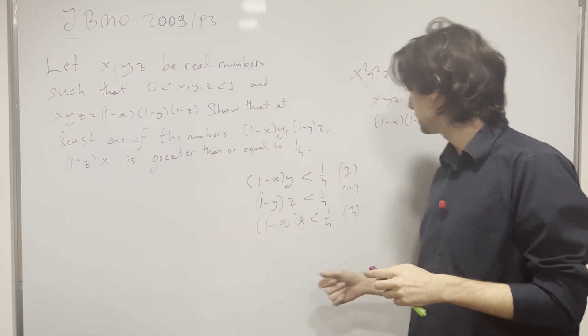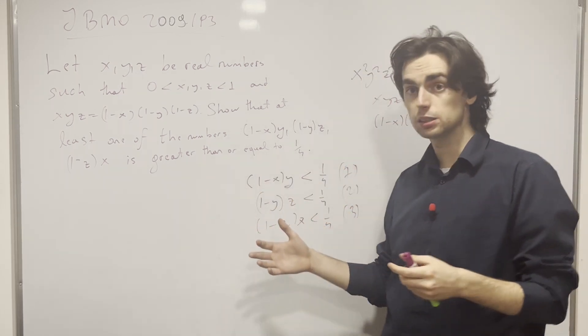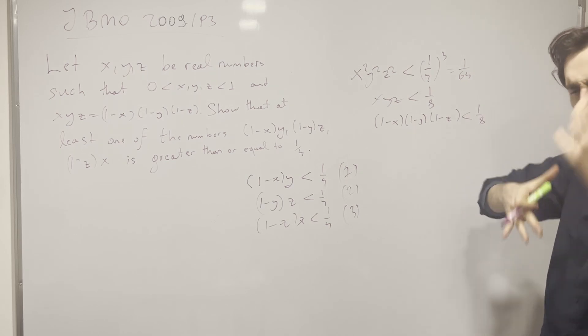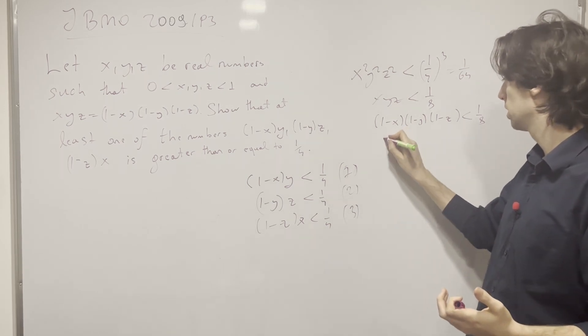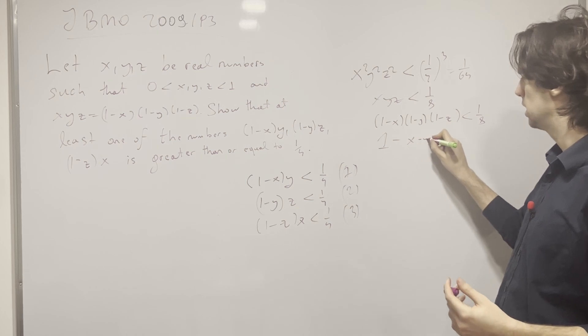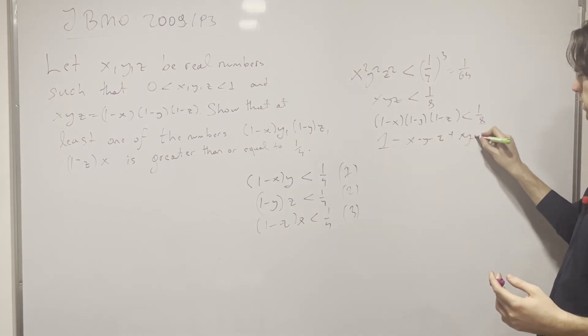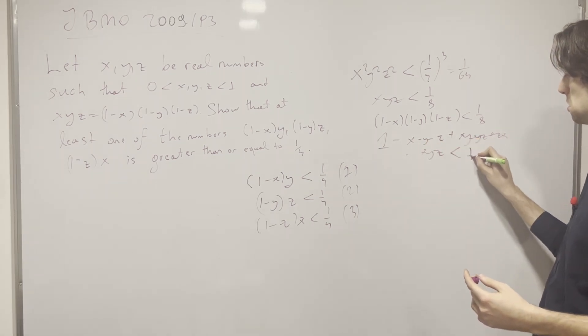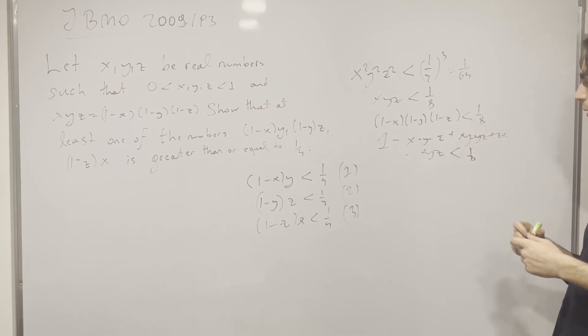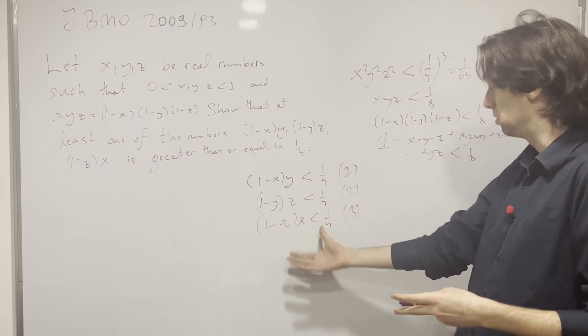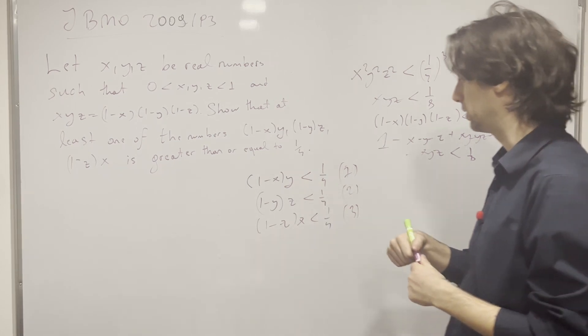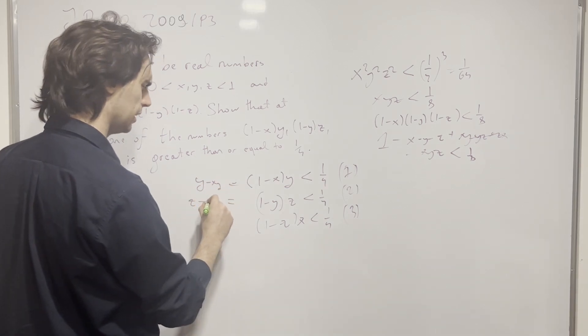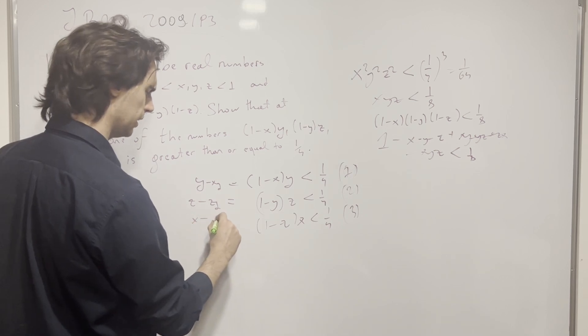Or maybe we have multiplied things here. Maybe if we add them together, we get something else that's interesting. Maybe let's look at what this actually is equal to. What this is equal to is 1 minus x minus y minus z plus xy plus yz plus zx minus xyz, smaller than 1 over 8. Now the question is, do you see anything here connecting it to this here? Like this here is equal to y minus xy is equal to z minus zy, x minus xz.